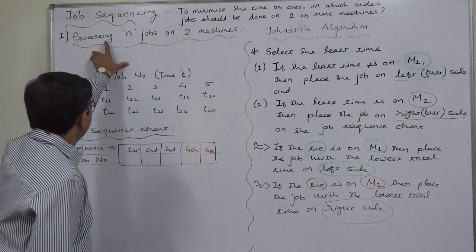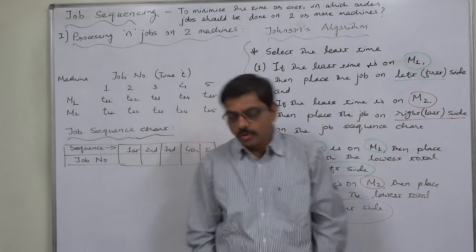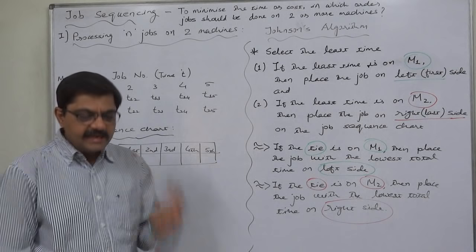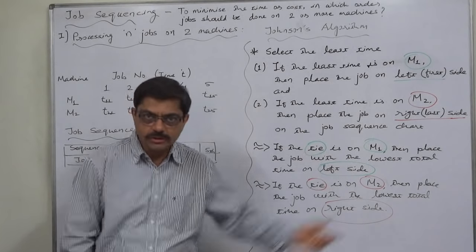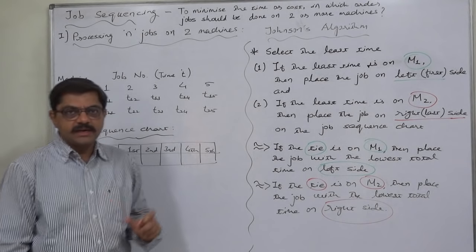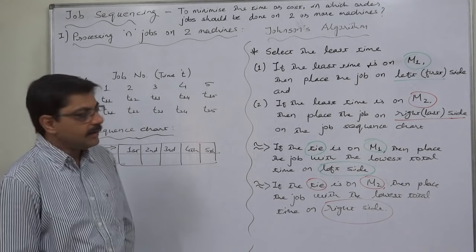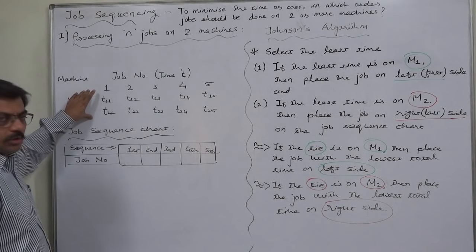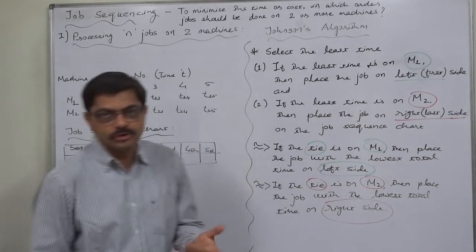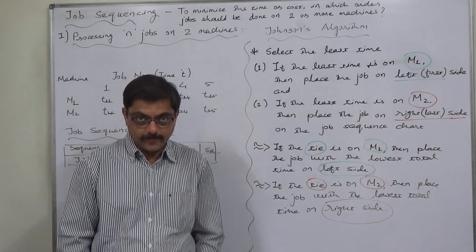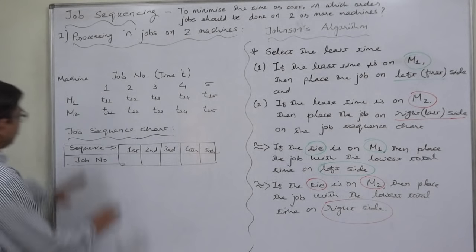The main topic is processing n jobs on two machines. Any job is performed on two machines in order: machine one and machine two. That means the work of any job is started on machine one and then it is placed on machine two, where the job is completed. Our problem is to complete n jobs in minimum time or with minimum possible cost — this is ultimately the problem of time or cost minimization.